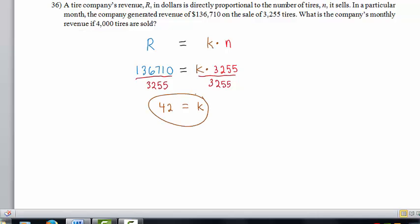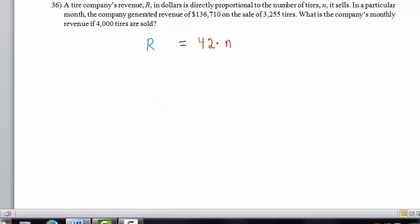Therefore, in this equation, we can replace K with 42. So we have R equals 42 times N.